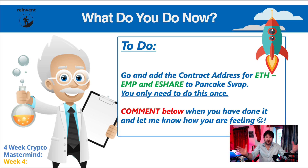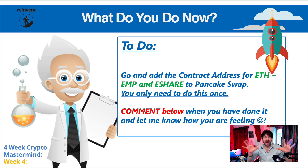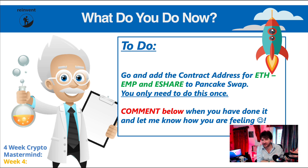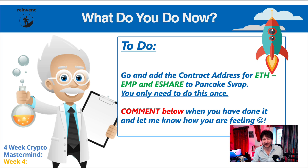So what do you do now? I want you to go and add the contract address for Ethereum, EMP, and eShare to PancakeSwap. You only need to do this once — once it's there, you don't need to do it every time you want to purchase any of these tokens; it will be there forever. Let me know in the comments below when you've done this, because it's just another little 1% better you're getting every day. You hadn't done this when you woke up this morning, and now you're adding contract addresses to PancakeSwap. Let me know if you're feeling excited and empowered, and I'll see you in the next video.